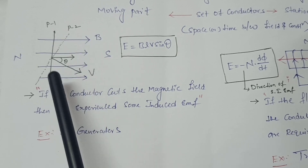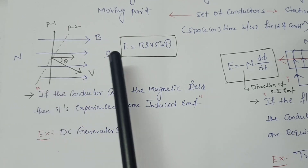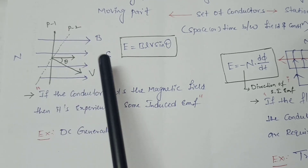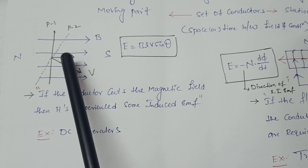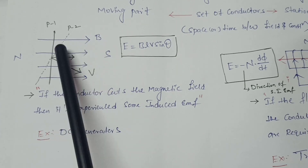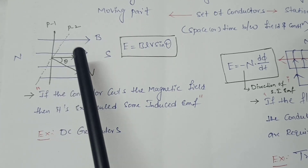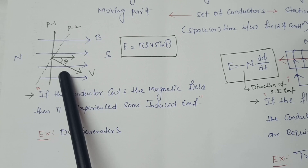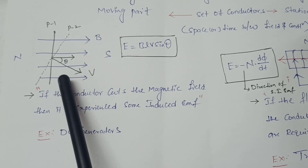Whenever a current-carrying conductor is placed between two magnetic fields, the conductor experiences the flux, and we can produce some EMF. That EMF is also called dynamical induced EMF.